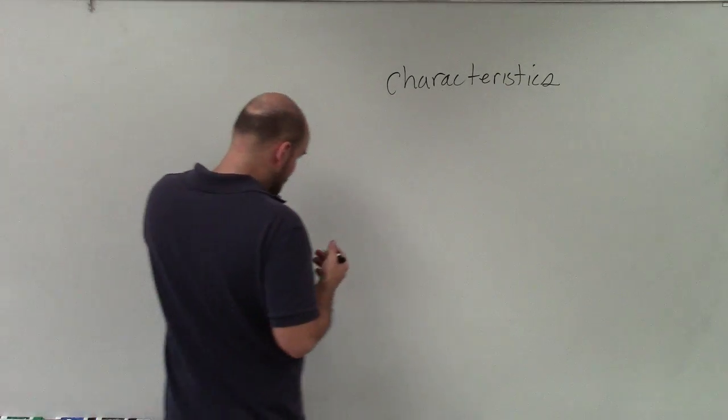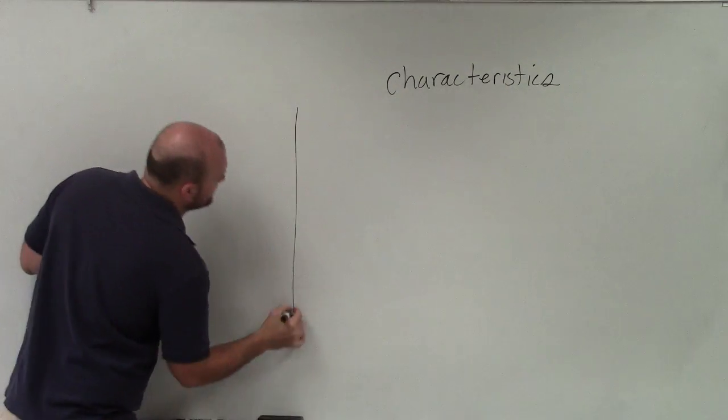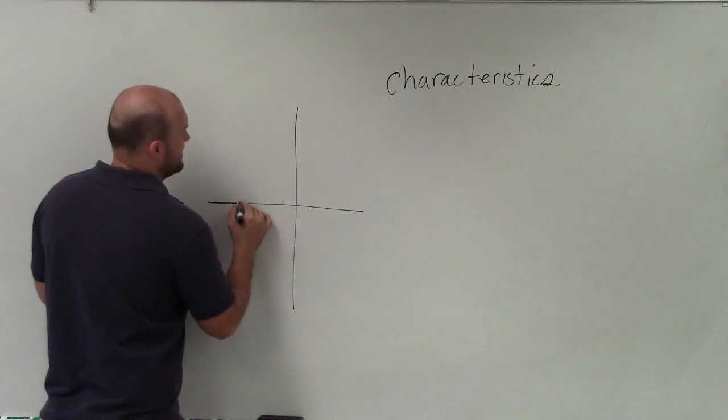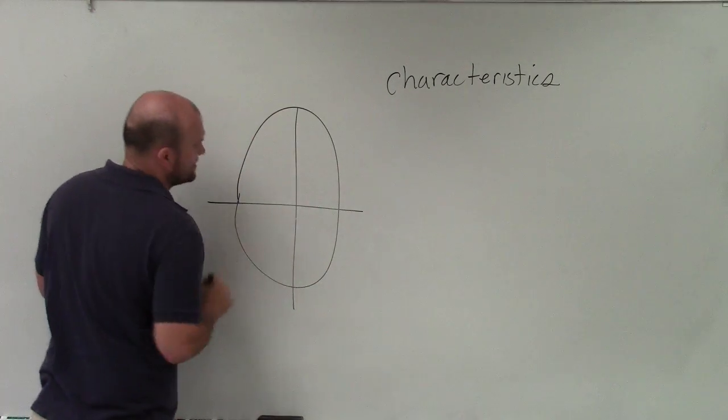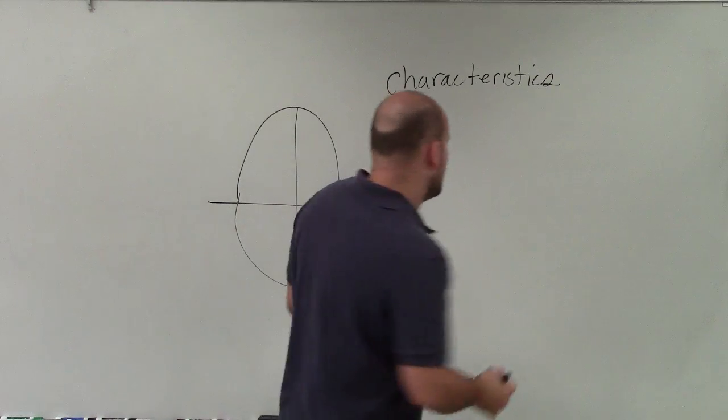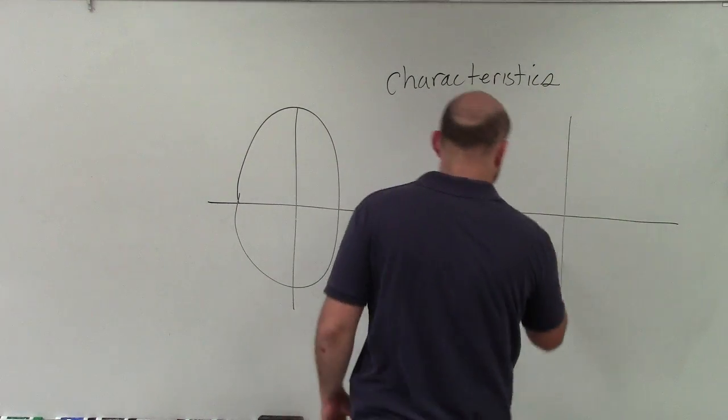When we're looking at an ellipse, there's two different types of ellipses that we have. We're going to have one where the major axis is going to be vertical, and we're going to have one where the major axis is horizontal.